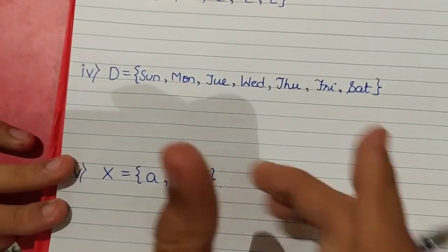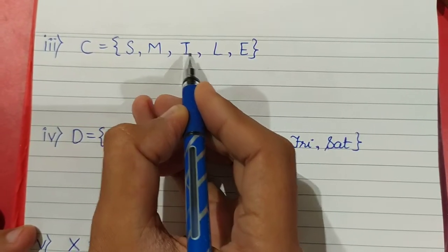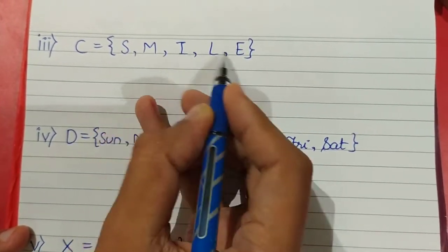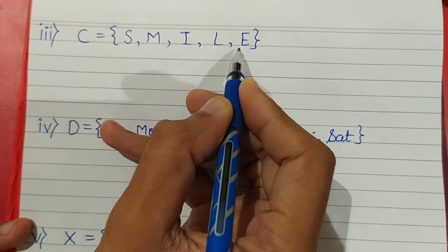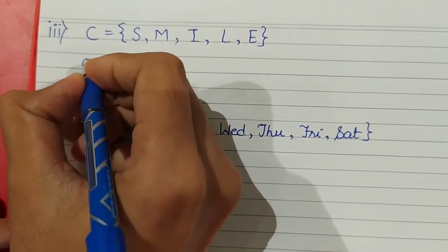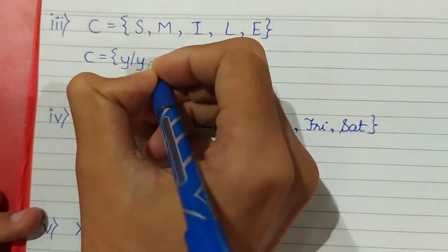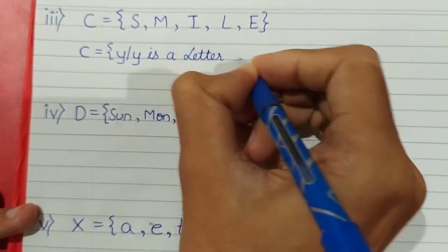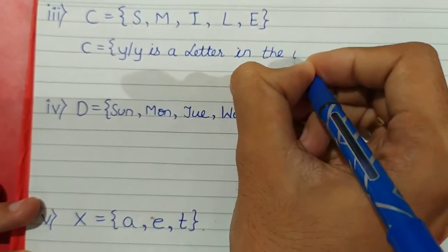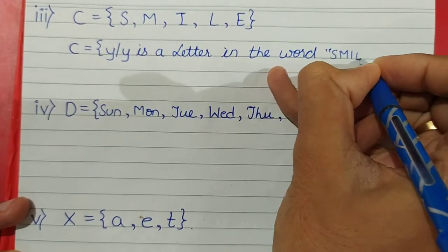Example number 3: C is equal to the letters S, M, I, L, E. All these letters from the English alphabets belong to the word 'smile'. So we can write it in set builder form as C = { y such that y is a letter in the word "smile" }. 'Smile' has to be written in double inverted commas.